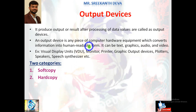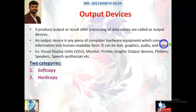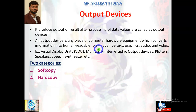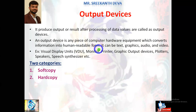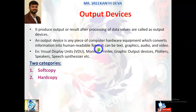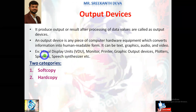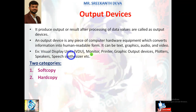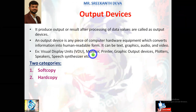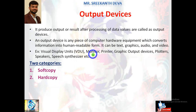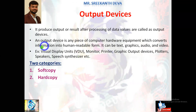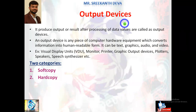An output device is any piece of computer hardware equipment which converts information into human-readable form. It can be any kind of data — text, graphics, audio, and video. Several examples include VDU (visual display unit), monitors, printers, graphic output devices, plotters, speakers, and speech synthesizers.